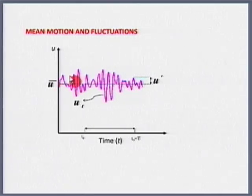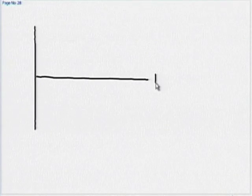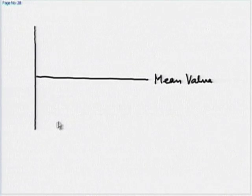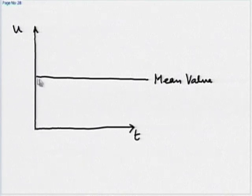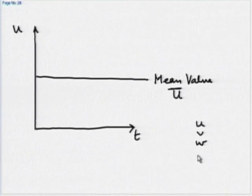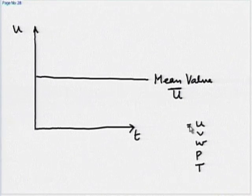This mean quantity is shown by a black line in the diagram. If the axis is time and we take U only, then U-bar represents the mean quantity. Any quantity of interest - whether it is U, V, W, pressure, or temperature - can be written as the sum of a mean quantity and a fluctuating component at that instant of time.